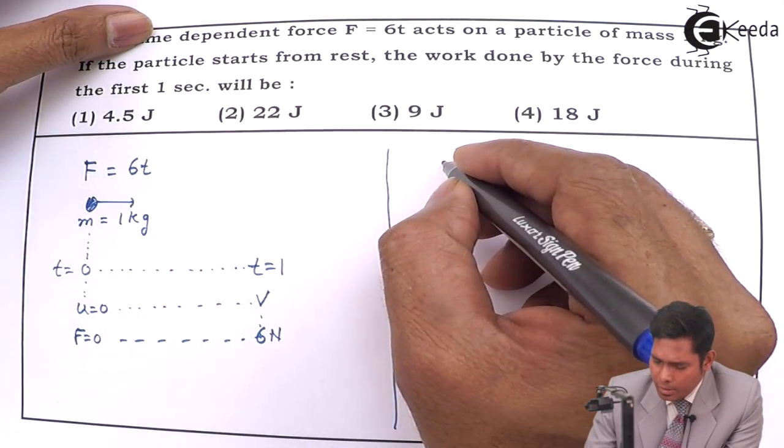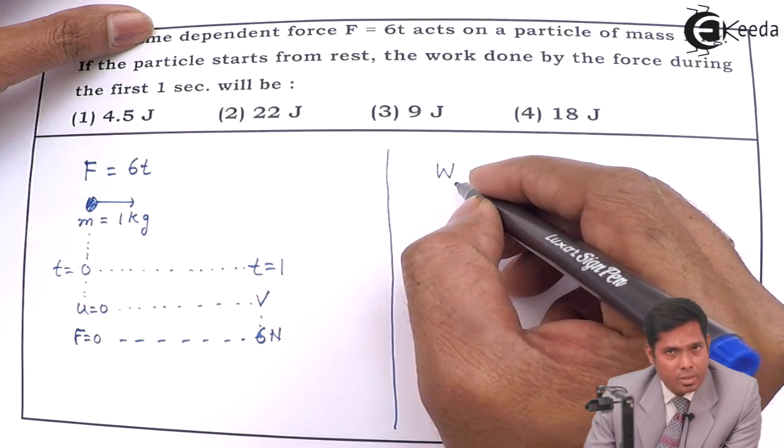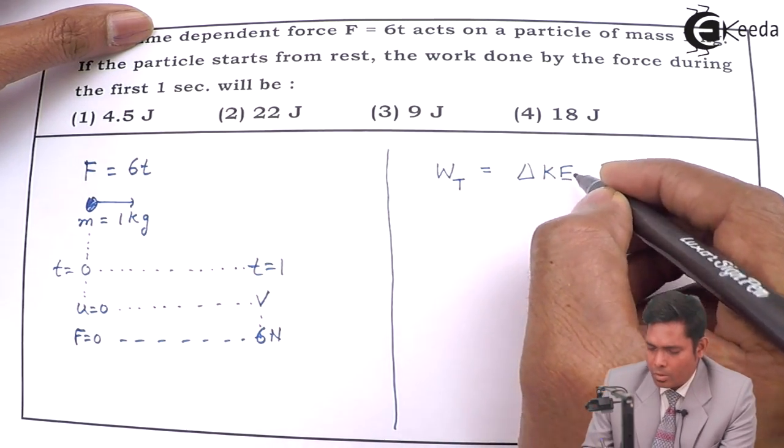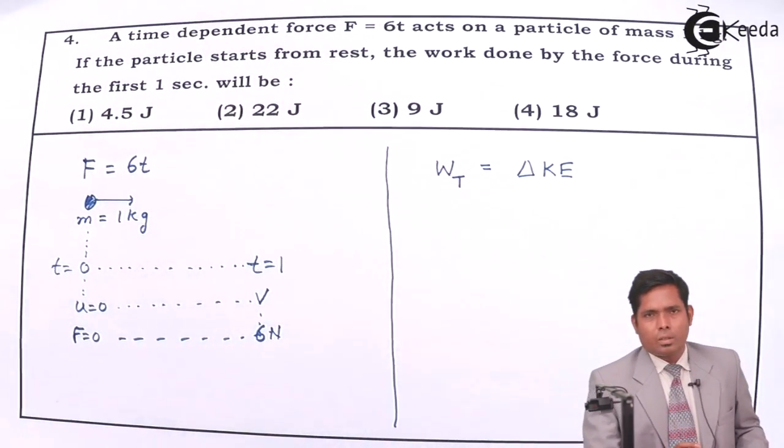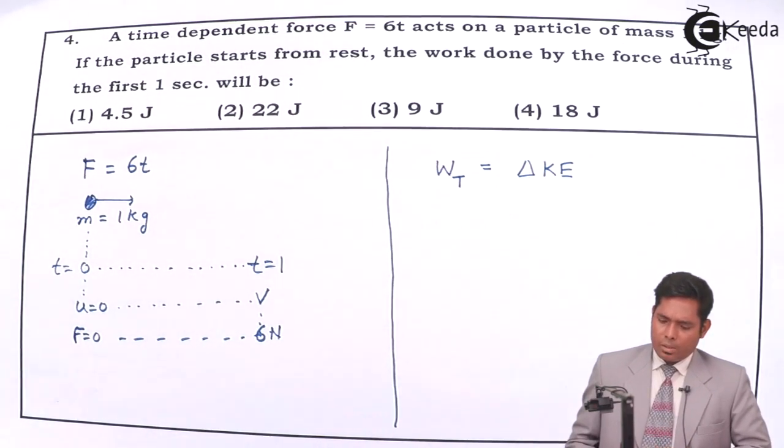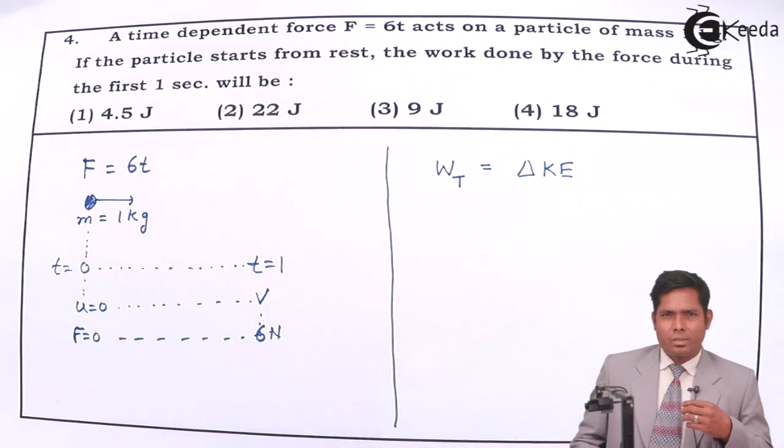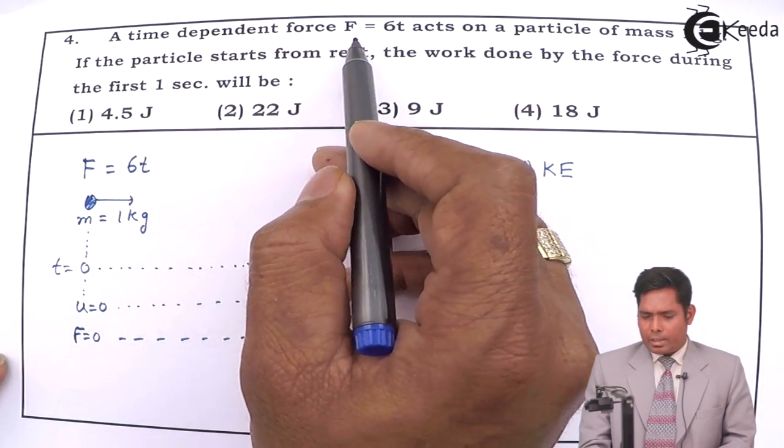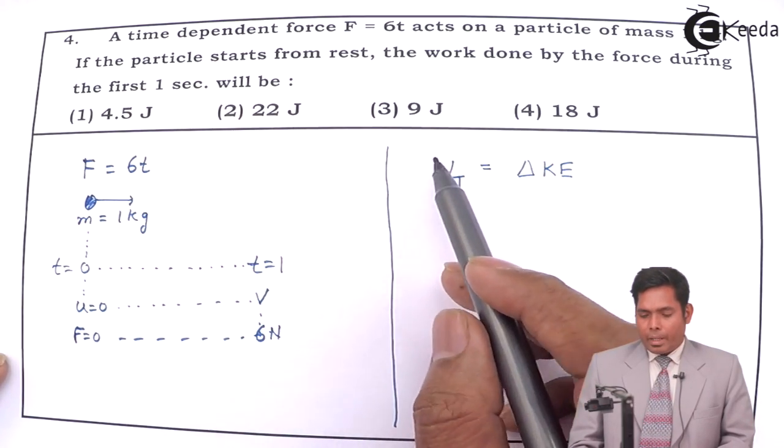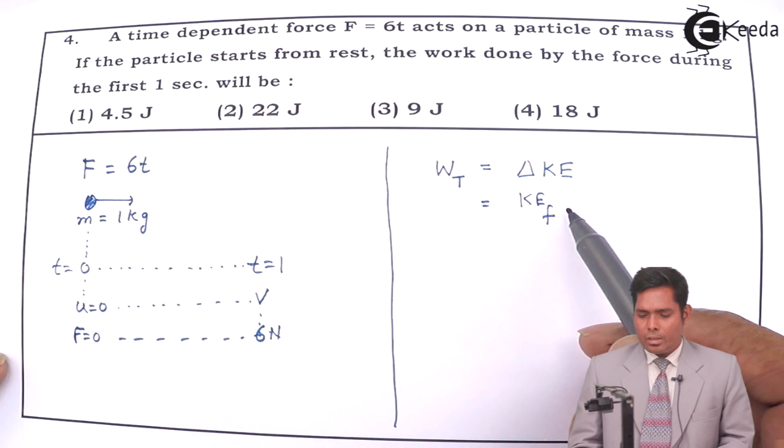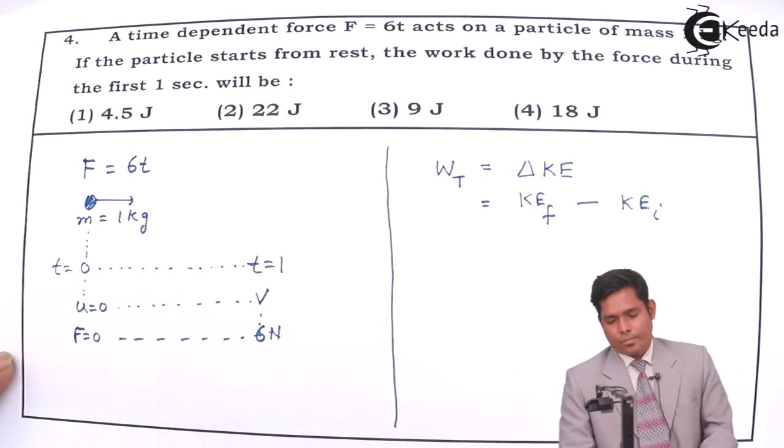We are using the energy theorem that the work done by all the forces, the total work done, is change in kinetic energy. Total work done means the work done due to all the forces involved, all the forces that are acting on the object. Maybe gravitational, elastic, electrostatic, or whatever possible cases - conservative, non-conservative, internal, external, all total work done due to all the forces. But here, the only one force is acting that is 6t force. So the work done by that 6t force is equal to change in kinetic energy. That is final kinetic energy minus initial kinetic energy.